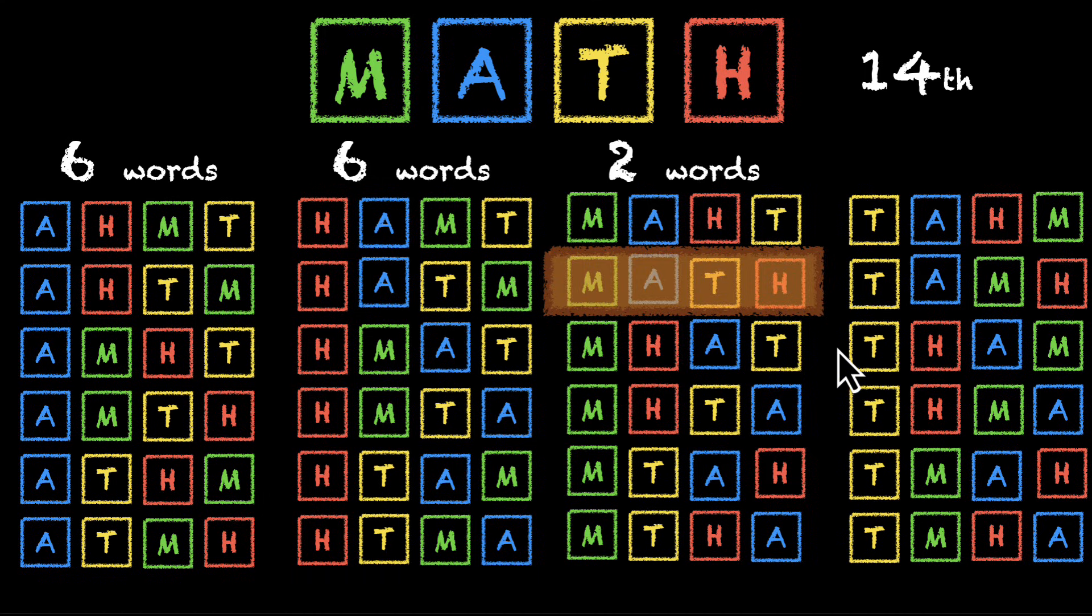Now this is probably the slowest approach to figure this out: write all of these down and then figure out where math is. But now that we have written this down, can we think of some parts of this solution that we can accelerate, that we can fast track? Do we really need to list all of these words down to figure out how many words start with A? If we fix A here, we're left with these three letters and they can rearrange themselves in six ways.